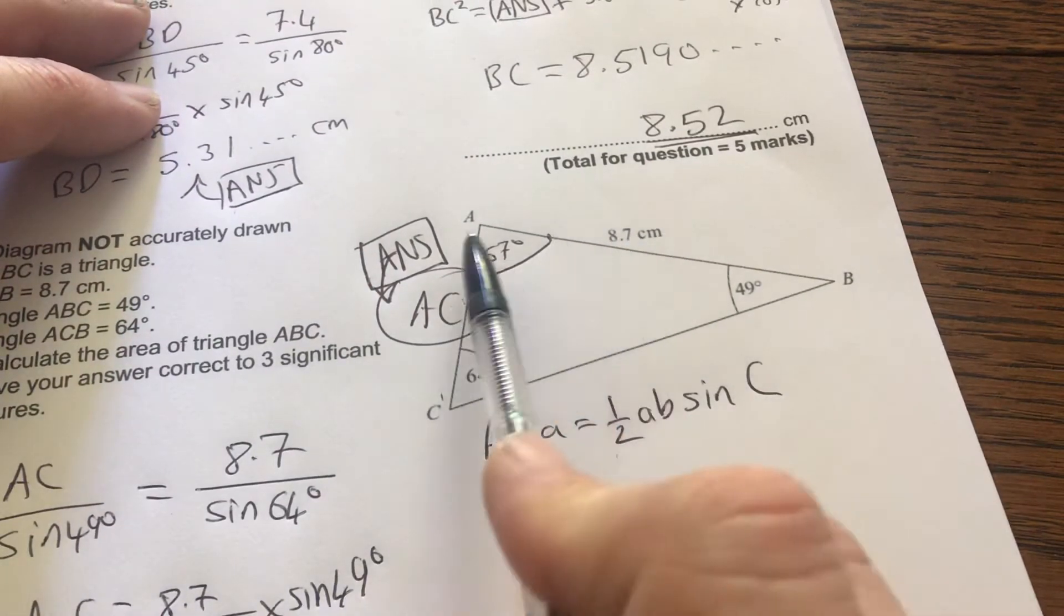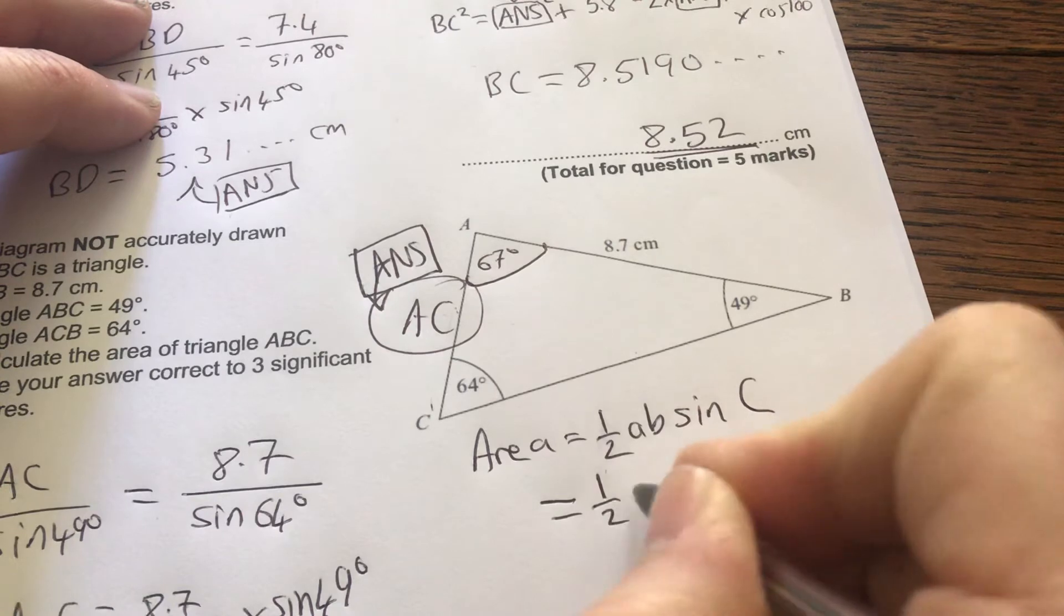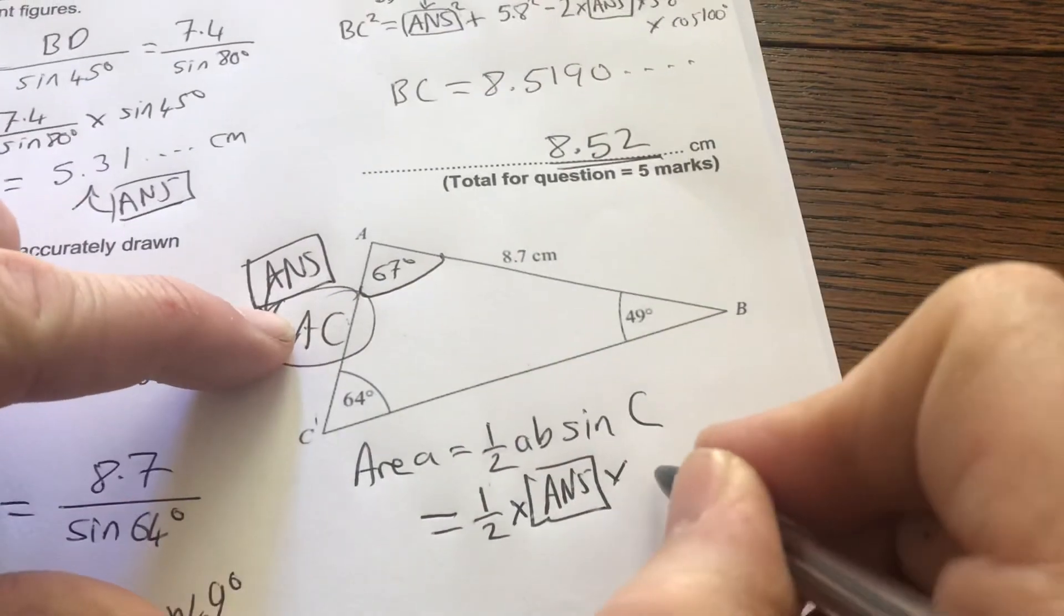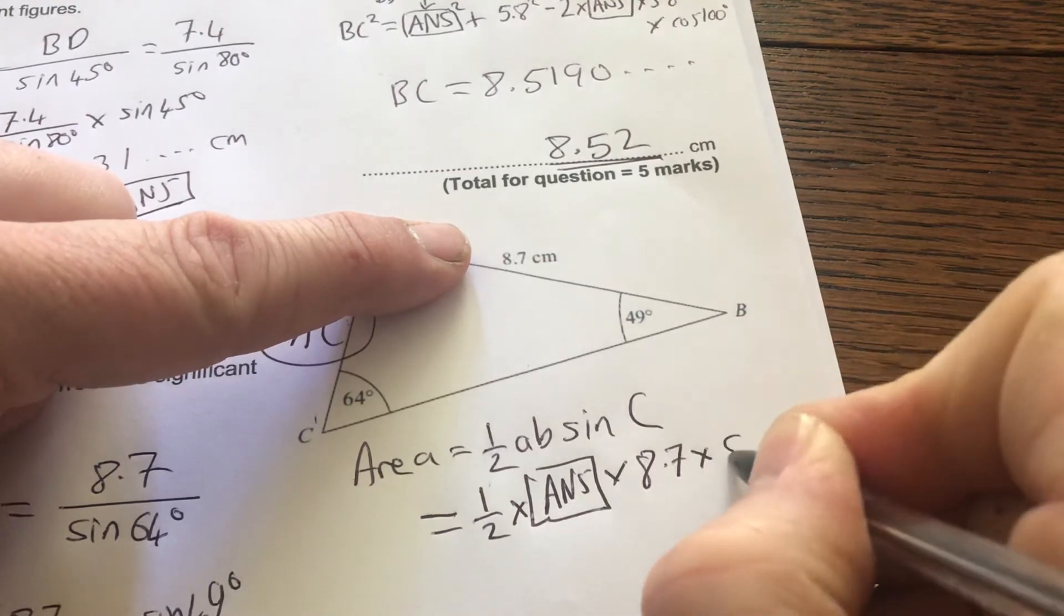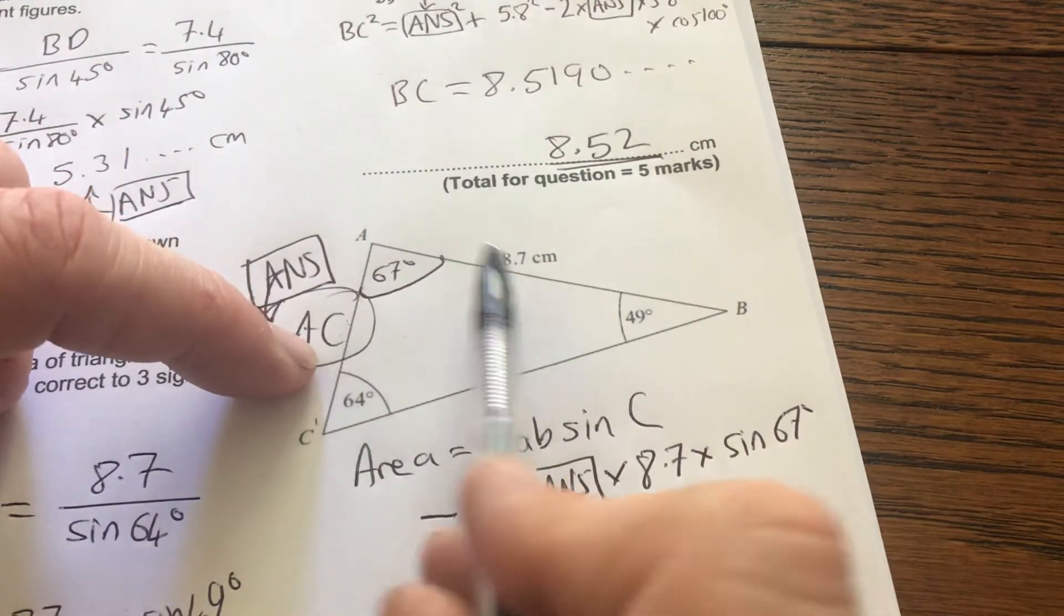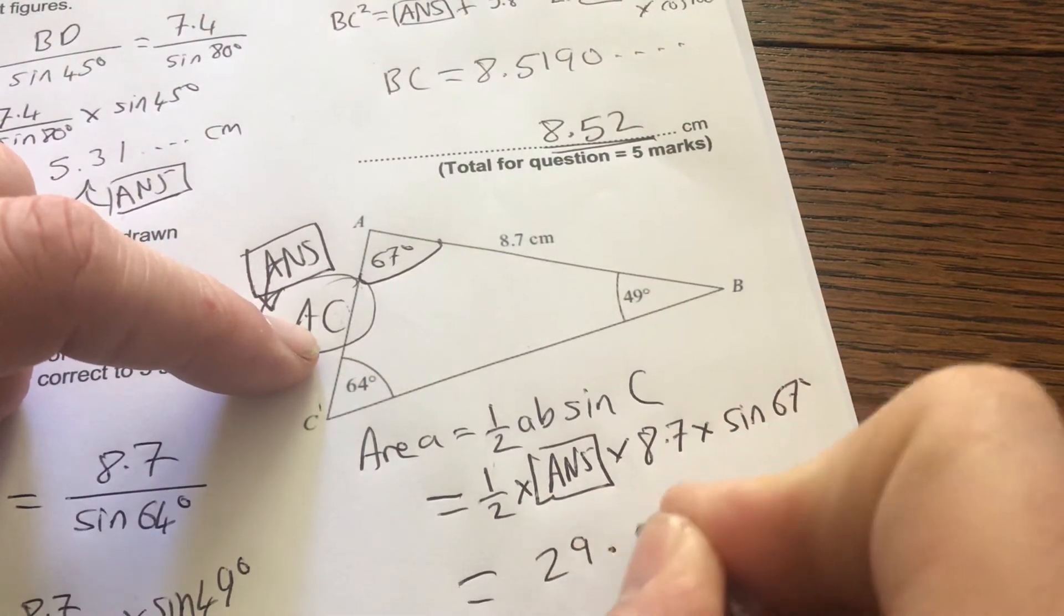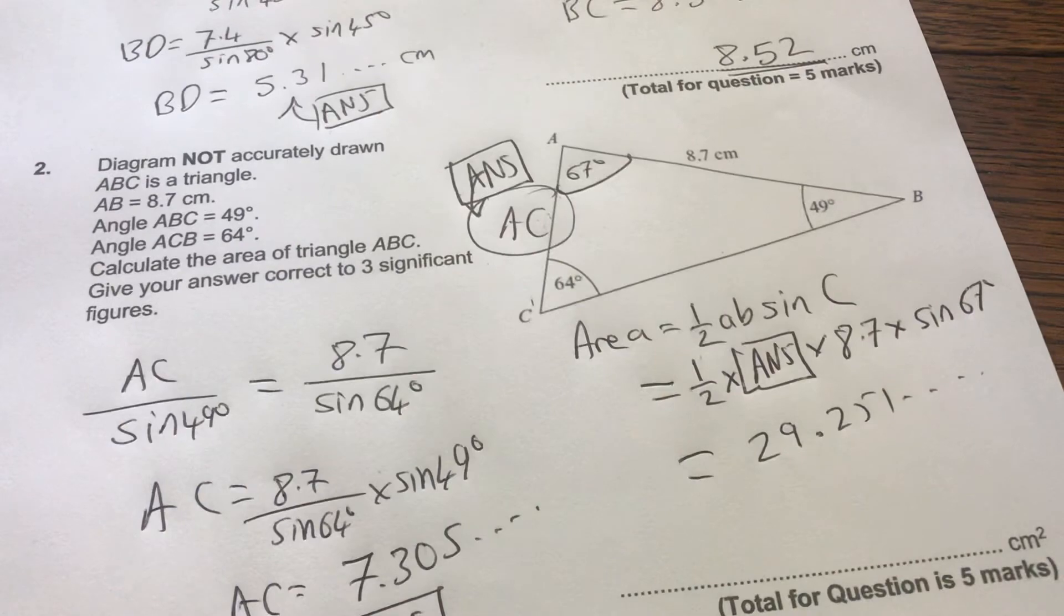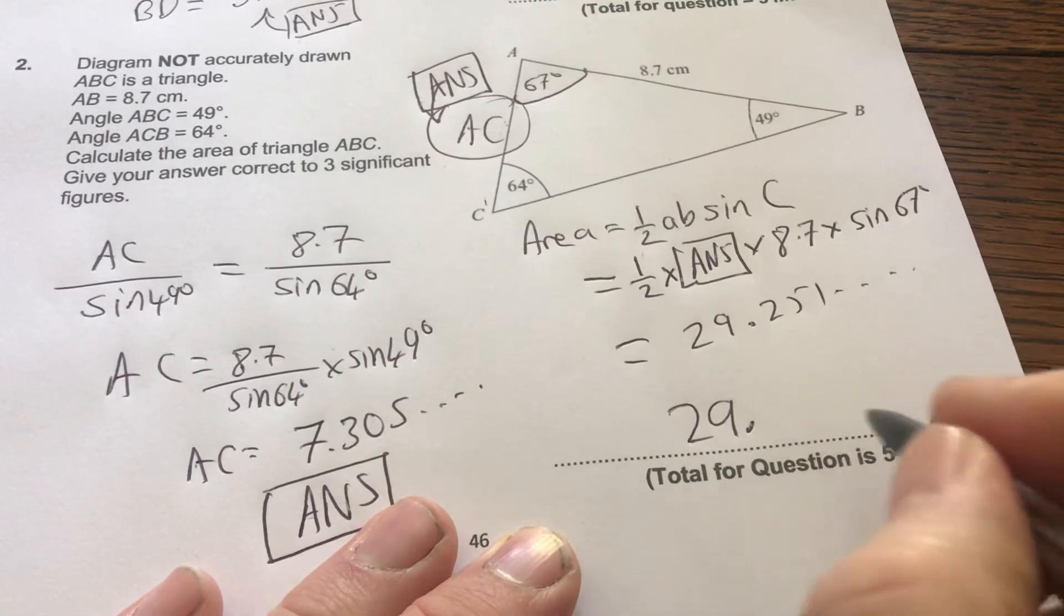This side, this side and the angle in between. So that area is half times my answer times b which is 8.7 times sine 67. Half times the two sides with the angle in between. And what does that give me? Gives me 29.251 and a bunch of numbers. But I want of course three significant figures, so it's 29.3.